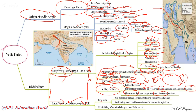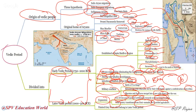Later Vedic period: 1000 to 500 BC. Major changes evolved — iron axes were introduced, so settlements expanded because iron tools could clear forests and allow faster expansion. This is seen through the Gangetic plains and western Gangetic plains. Vedic society changed from semi-nomadic to completely settled agriculture. Previously it was nomadic, then semi-nomadic; now it became fully agriculture-oriented.